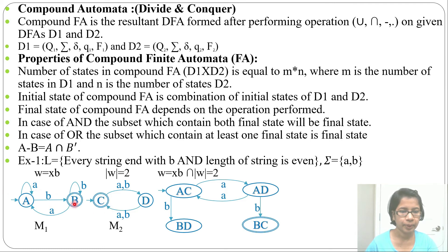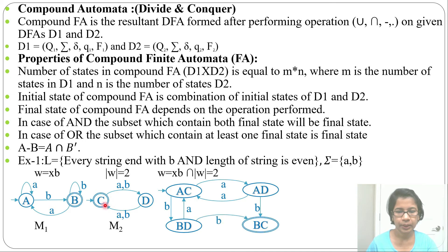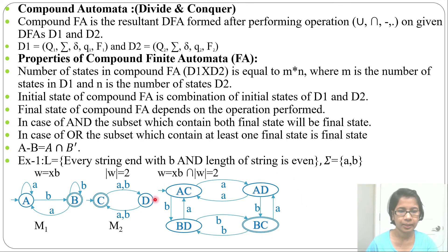From BD by a: B goes to A, D goes to C, so BD by a goes to AC. From BD by b: B goes to B, D goes to C, so BD by b goes to BC. From BC by a: B goes to A, C goes to D, so BC by a goes to AD. From BC by b: B goes to B, C goes to D, so BC by b goes to BD. This completes the DFA that accepts every string ending with b and of even length.